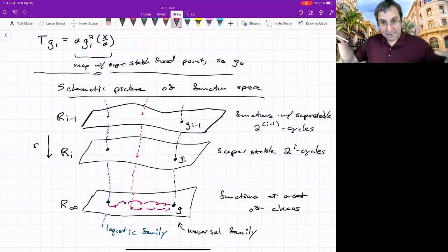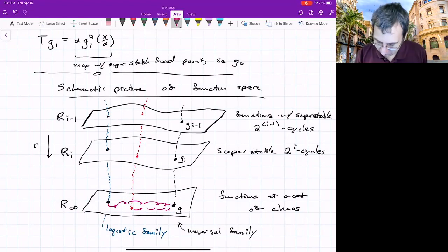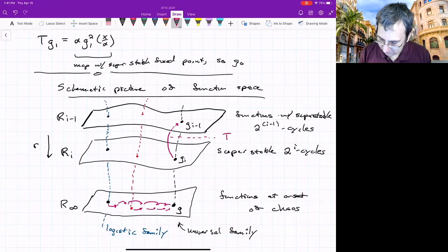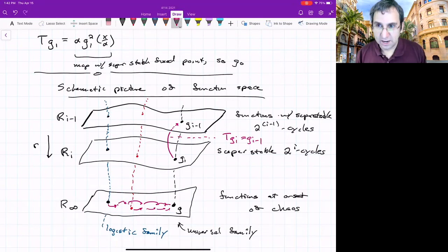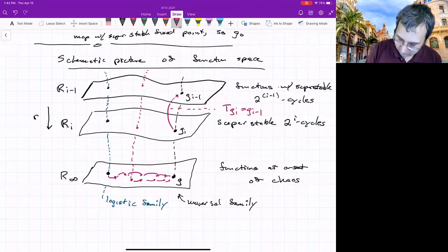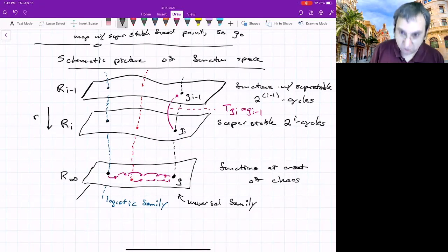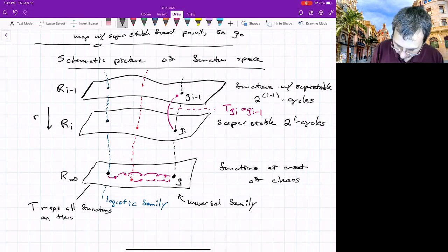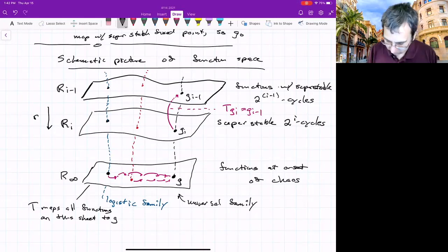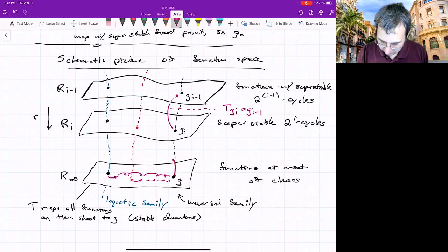So it's a fixed point and it has all these stable directions, but it does have an unstable direction. The unstable direction is that if you have g_i, it goes to g_{i-1}. This is from what I wrote up above, that T of g_i goes to g_{i-1}. So that corresponds to an unstable direction. So we've got two things going on here. On this sheet, T maps all points, all functions on this sheet to g. So those are the stable directions, but then there's an unstable direction. There's a direction where things are going away.